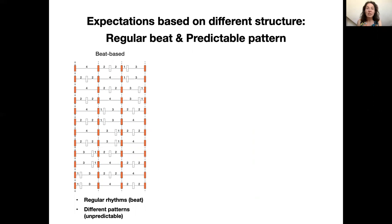The next example rhythm has a predictable pattern, depicted as the purple events, but no regular beats. Here we looped one identical pattern that is irregular. So for this rhythm, it is very hard to find a beat, but it would be possible to tap along to the pattern.